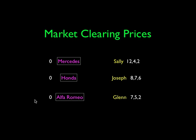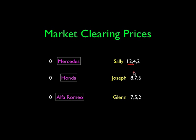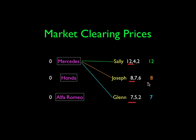So here we go. We have Sally, Joseph, and Glenn with their interests in the Mercedes, Honda, and Alfa Romeo. First, at price zero, what are the buyers' choices? If the price is zero, Sally's first choice is the Mercedes, Joseph's first choice is the Mercedes, and Glenn's first choice is the Mercedes. At price zero, Sally is happy 12, Joseph is happy 8, and Glenn is happy 7. But we have a conflict — everyone is fighting over the Mercedes.